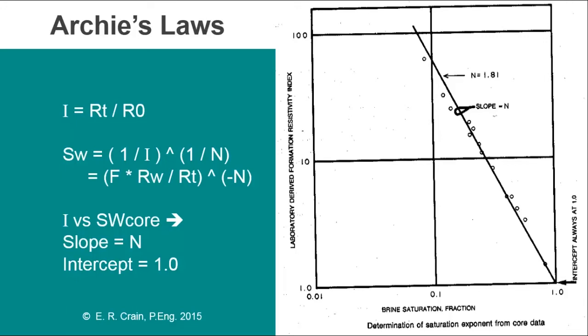The slope of the line on the graph is the value of N, and we do this work in the laboratory on a regular basis to find the values of A and M in the previous slide and the value of N on this slide. Default value for N is 2.